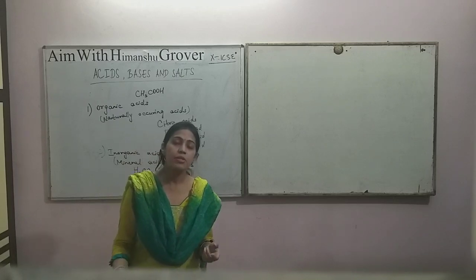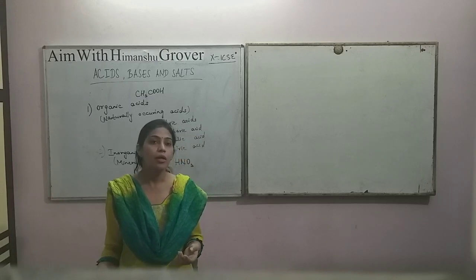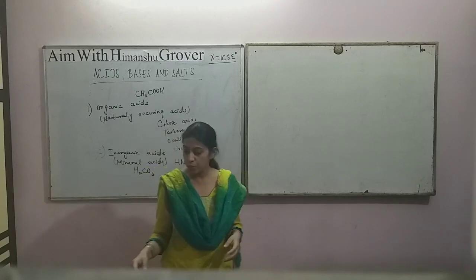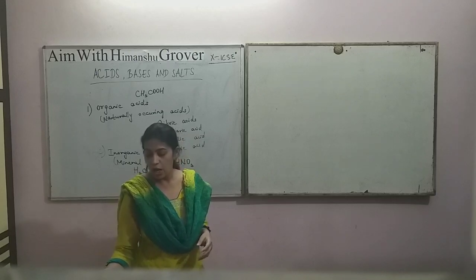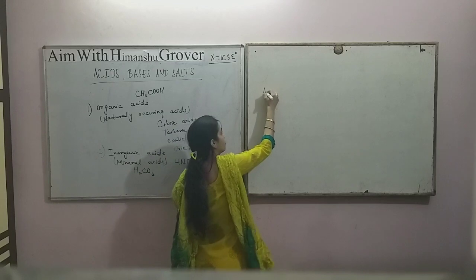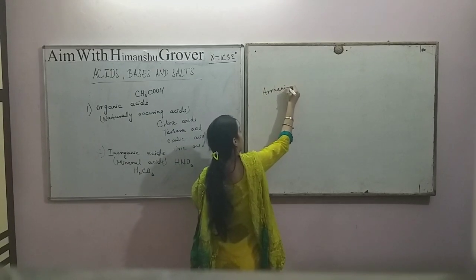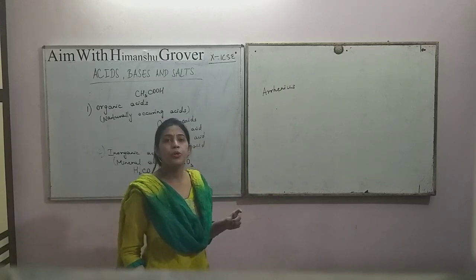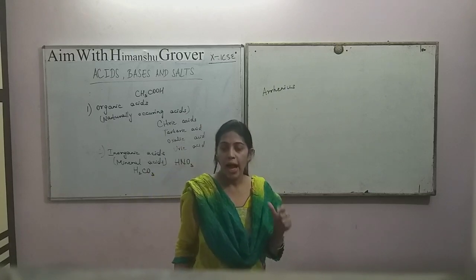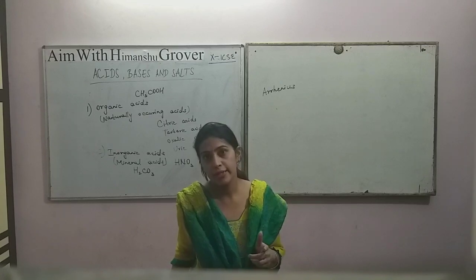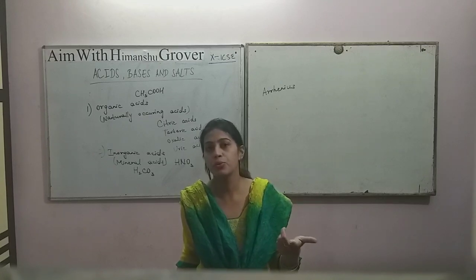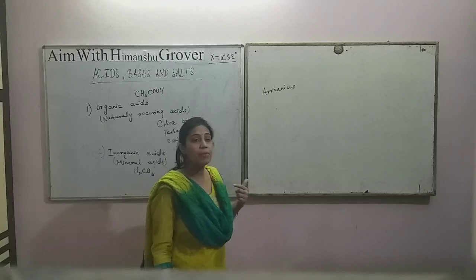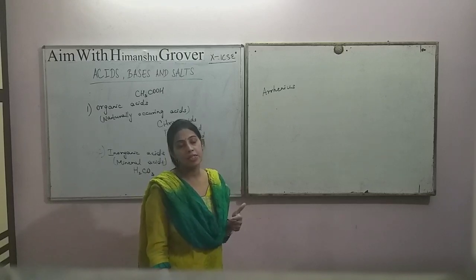When substances were classified on a chemical basis, the scientist Arrhenius gave a definition. He said: any substance which produces hydrogen ions as the only positively charged ions in their aqueous solution is called an acid. Any substance when dissolved in water that produces H+ ions, and those H+ ions are the only positively charged ions, that substance is an acid.